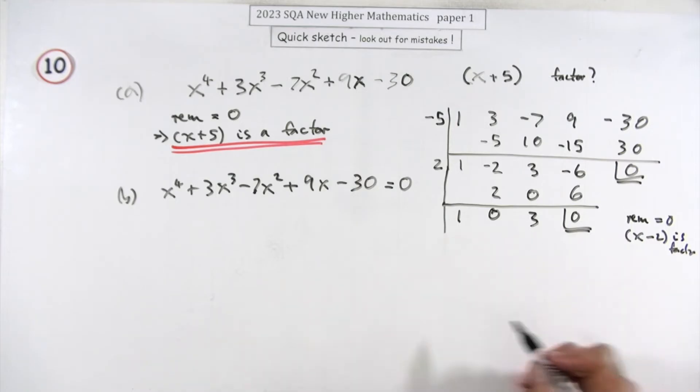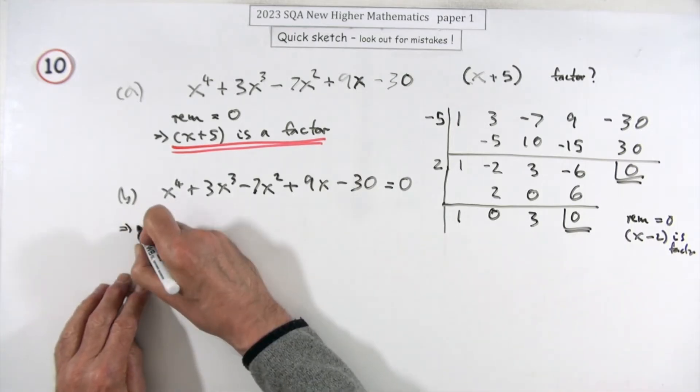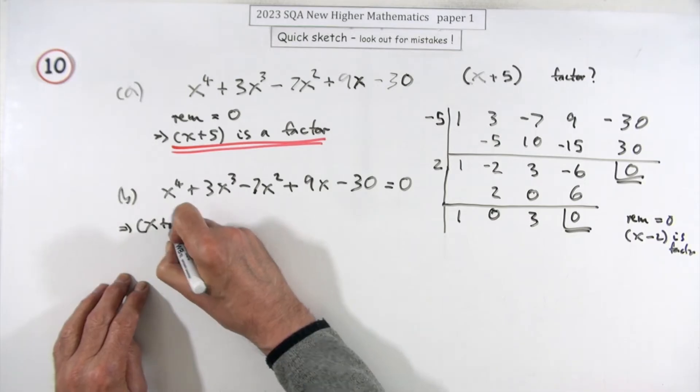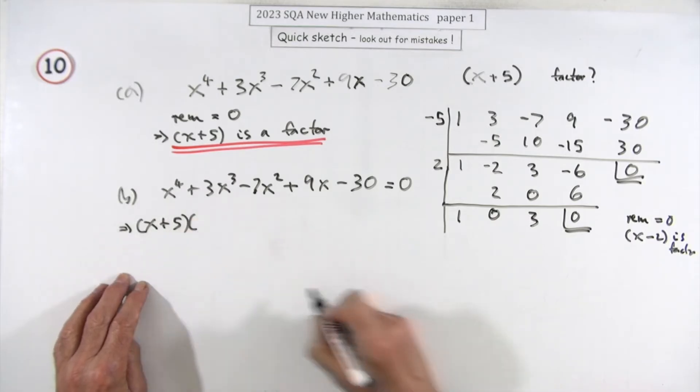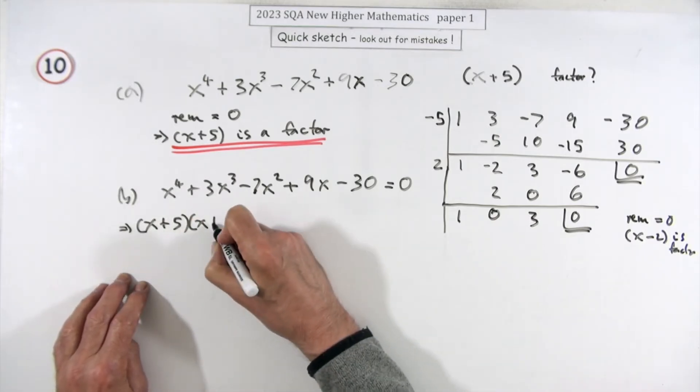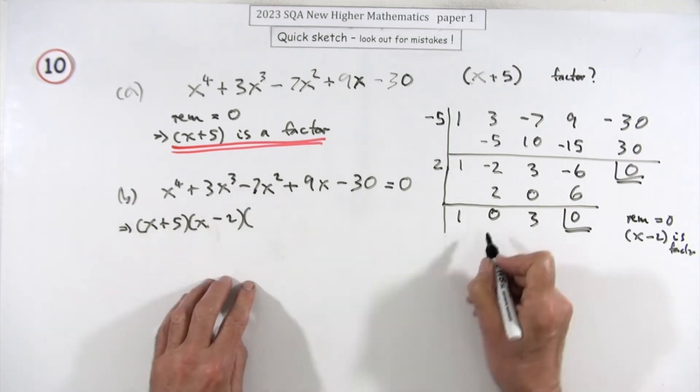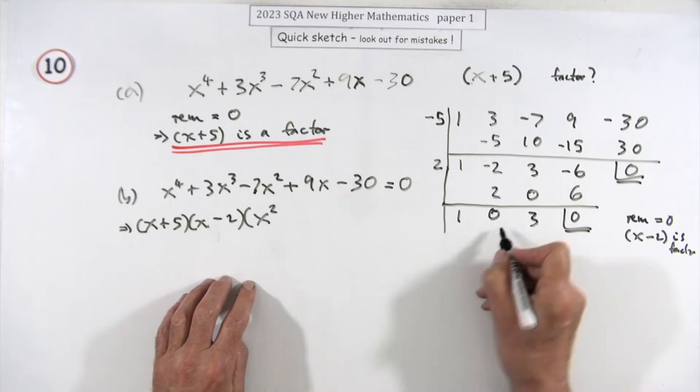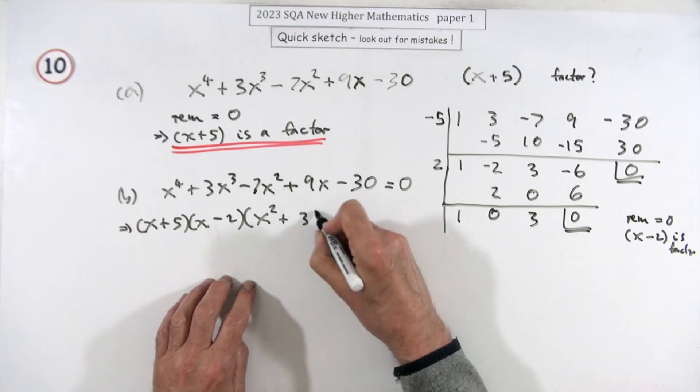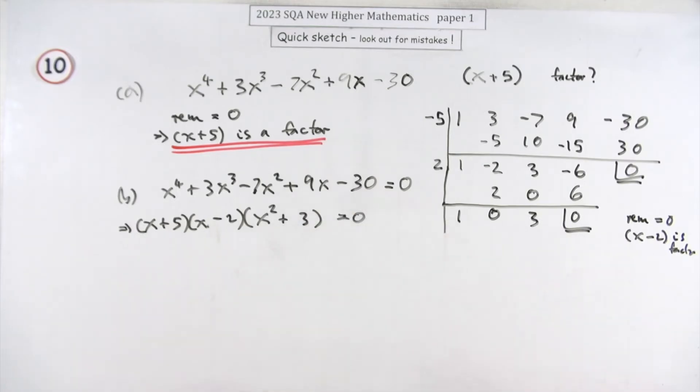Now I can fill this in. My two factors were x plus five to start with, then x minus two, and it left the quadratic factor x² with no middle term and a plus three.